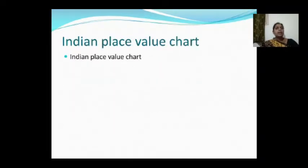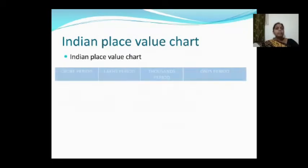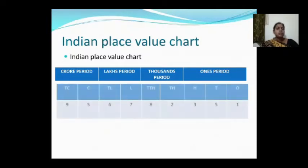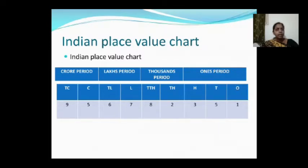Let us see the Indian place value chart — it is very important. I have taken here four periods: the ones period, thousands period, lakhs period, and crore period. The ones period has three place values: ones, tens, and hundreds.